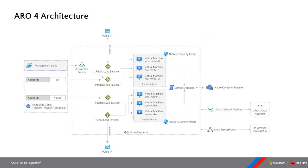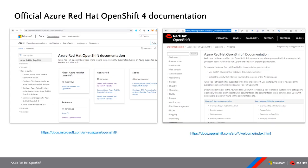That was a high-level introduction to ARO and its main features. Now let's look at how to get started. Both Microsoft and Red Hat have extensive documentation on ARO. Microsoft's docs focus primarily on setting up the cluster in Azure and integrations with Azure, while Red Hat's documentation is more comprehensive on OpenShift itself — its configuration and features. You can use both resources to get going.